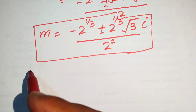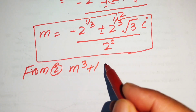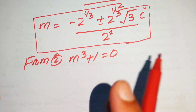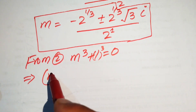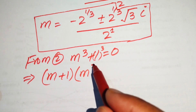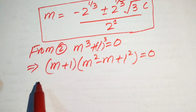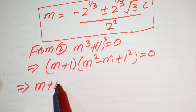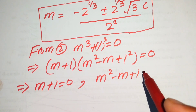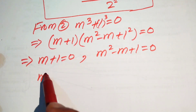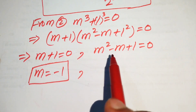For equation 2, m cubed plus 1 equals to 0. We write 1 as 1 cubed and use the sum of cubes formula: a cubed plus b cubed equals (a plus b)(a squared minus ab plus b squared) equals to 0. The first case gives m plus 1 equals to 0, so m equals to minus 1.